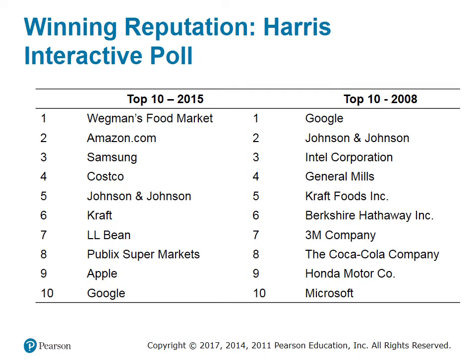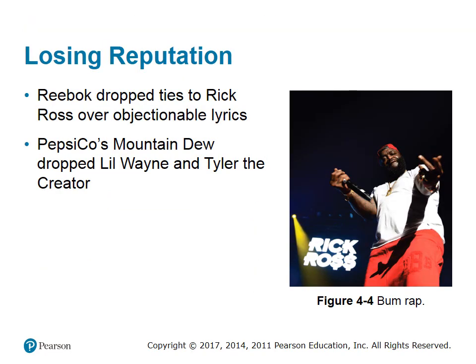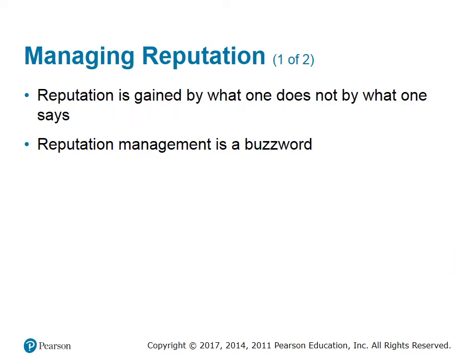Winning reputation: according to the Harris Interactive Poll, here are the top companies in terms of reputation. Losing reputation: Reebok dropped its ties to Rick Ross over objectionable lyrics. PepsiCo's Mountain Dew dropped Lil Wayne and Tyler the Creator. Large companies have learned the hard way in recent years that paying rappers to endorse your products can wind up torching your corporate reputation. Managing reputation: reputation is gained by what one does, not by what one says. Organizations and individuals must operate with the implicit trust of the public — it's how we choose business partners, vendors, and friends.